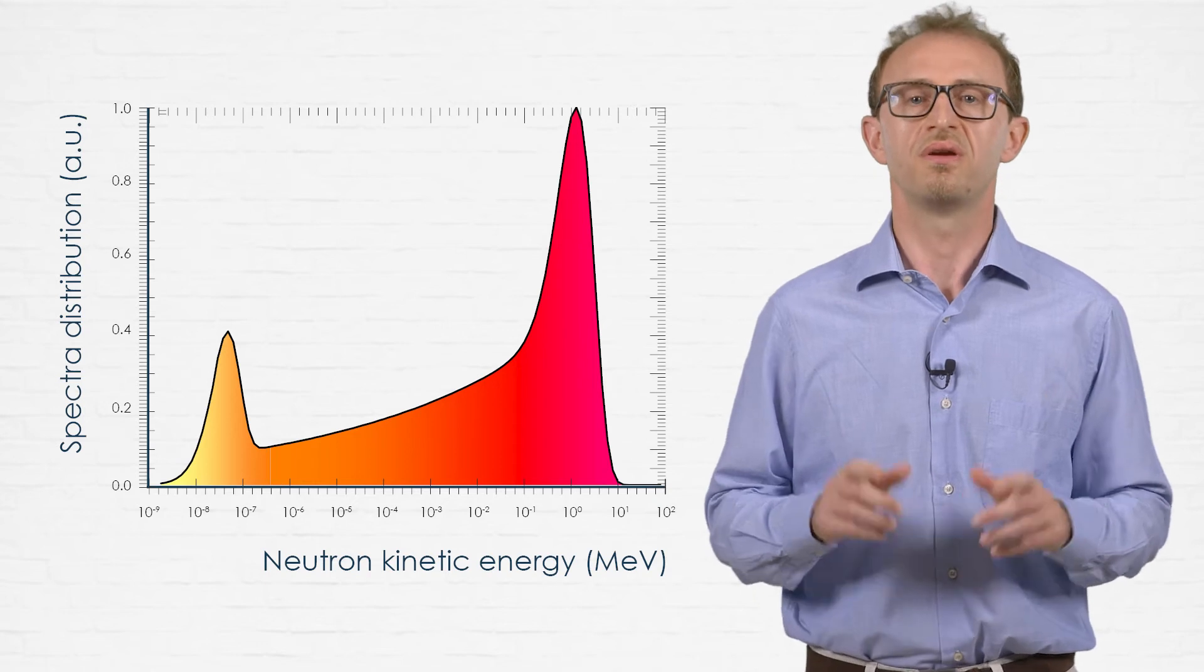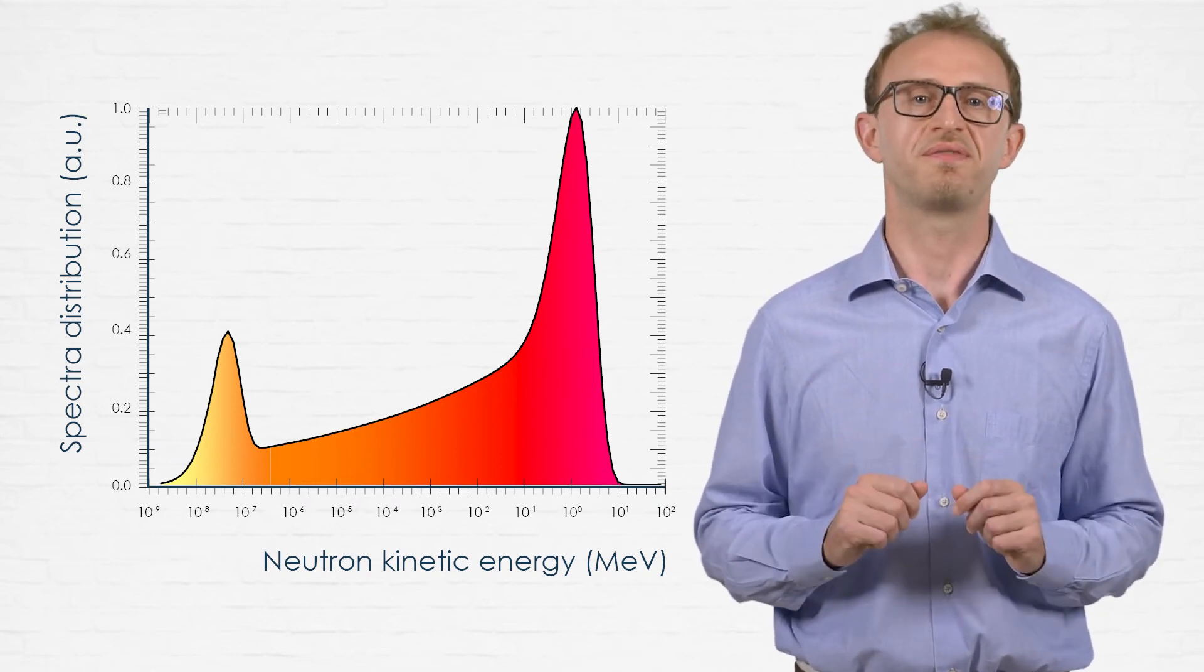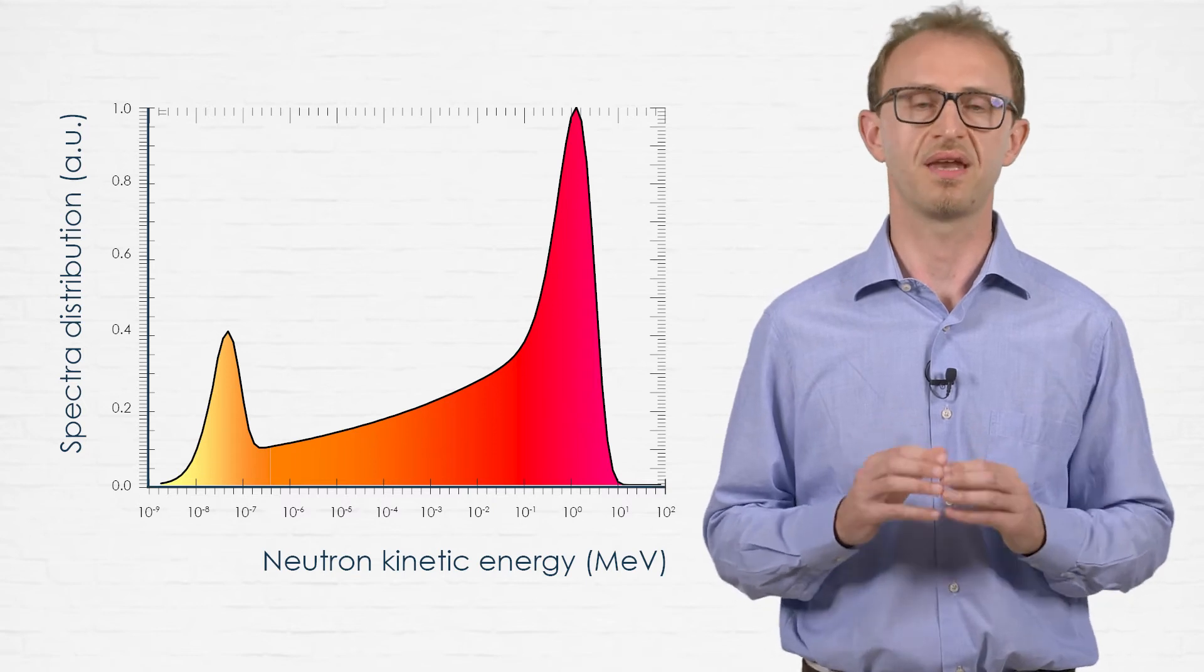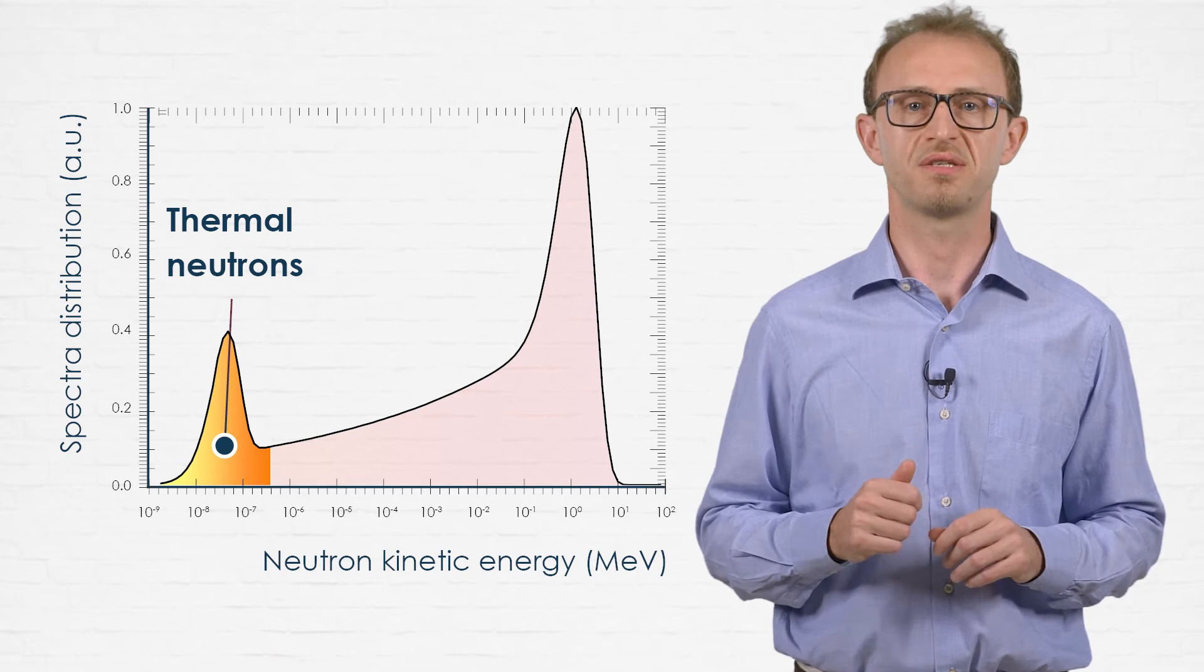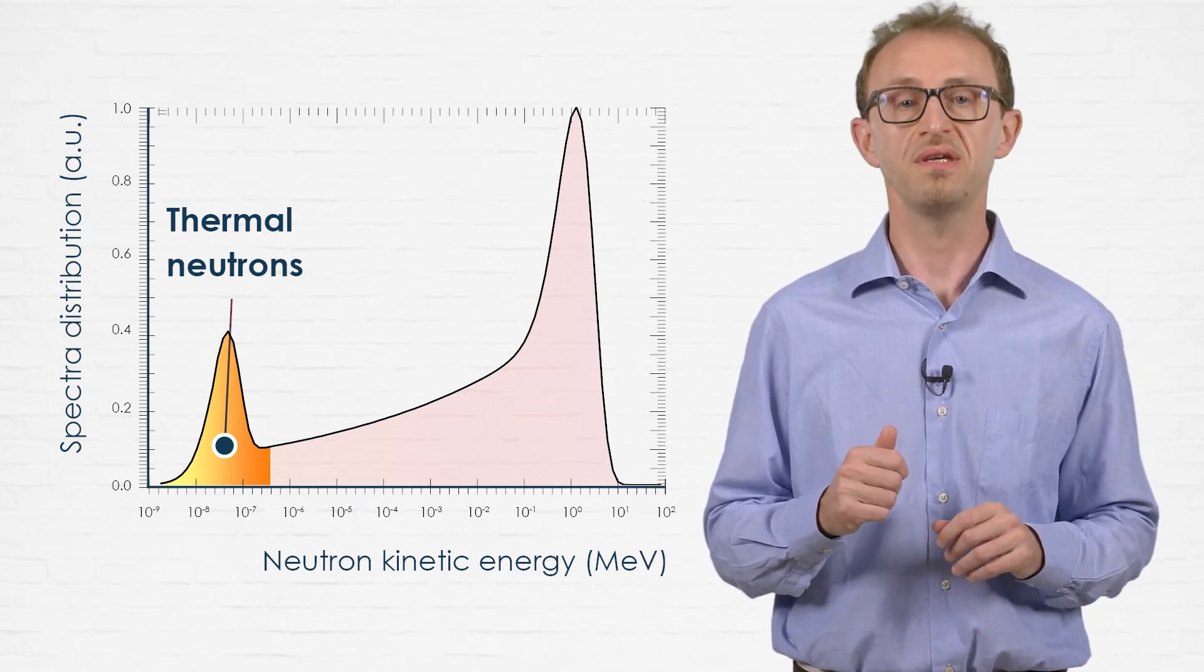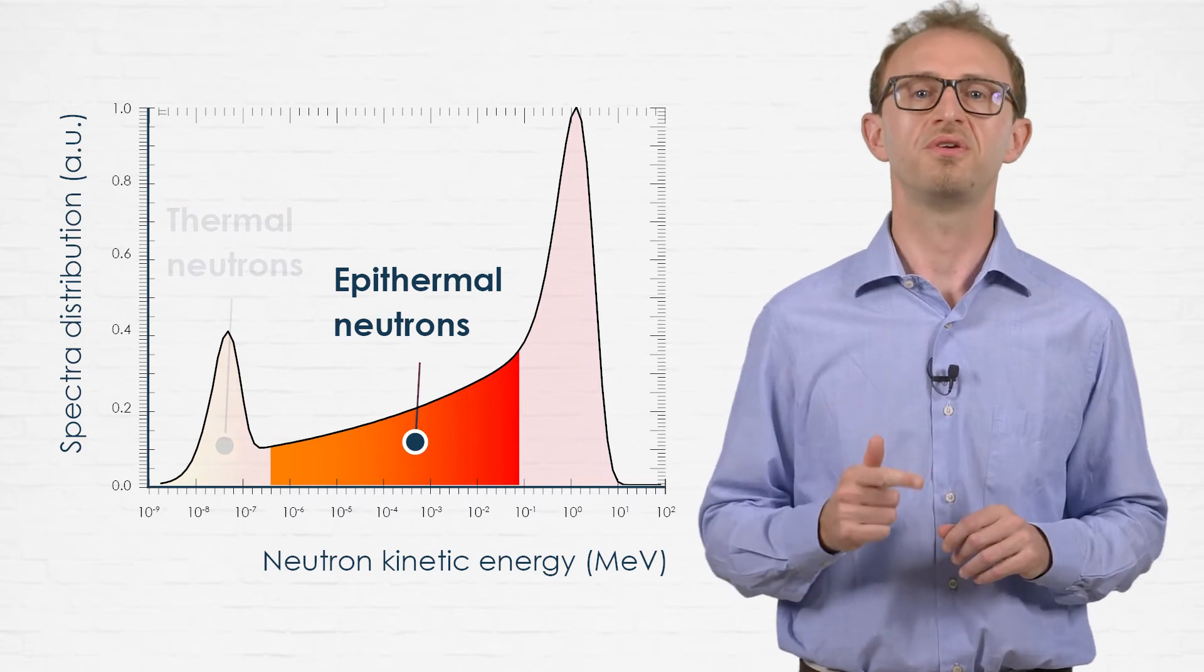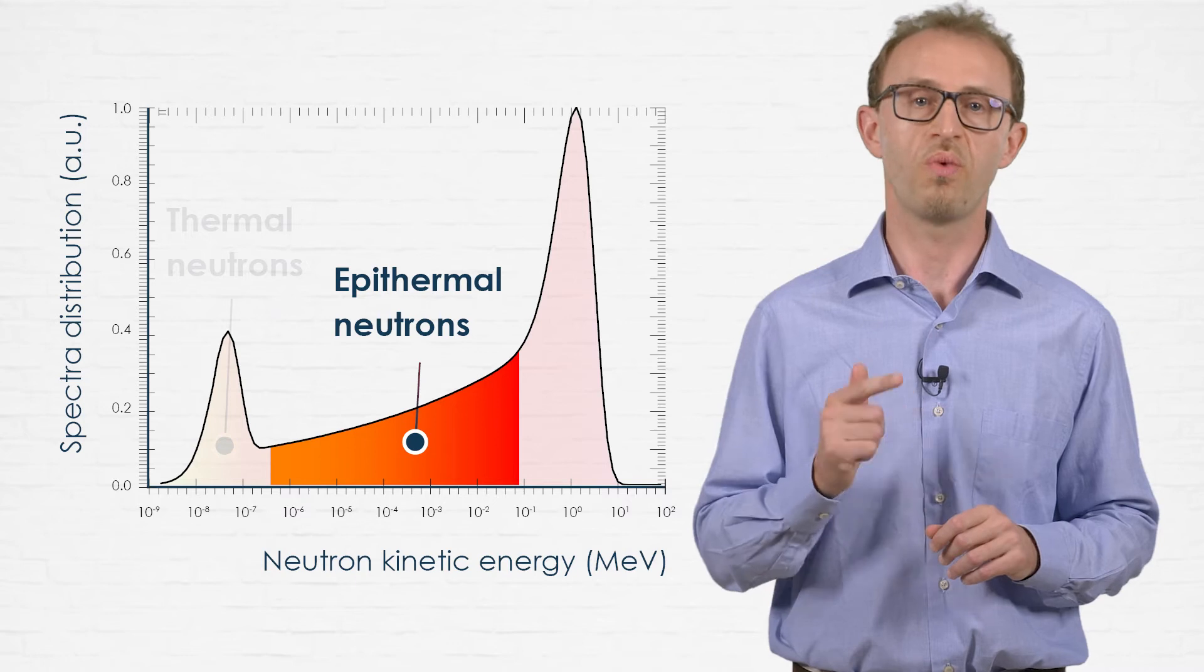For this reason, neutrons up to 20 MeV are conventionally classified according to their kinetic energies. We have thermal neutrons, characterized by energy values ranging from 0 to 0.5 eV, epithermal neutrons with energy between 0.5 eV and 100 keV,